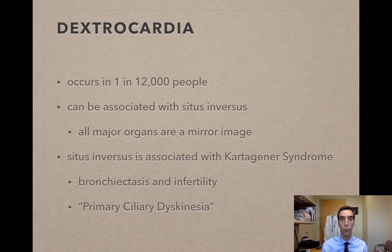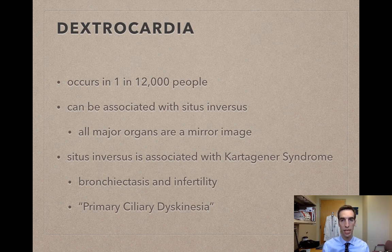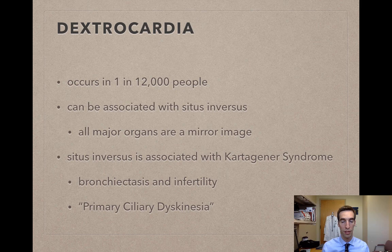Dextrocardia occurs in about 1 in 12,000 people. It can be associated with situs inversus — a condition in which all major organs are a mirror image. Situs inversus is associated with Kartagener syndrome, which is associated with bronchiectasis and infertility because of ciliary dyskinesia, where the cilia aren't beating in the proper fashion.